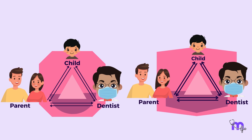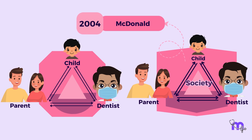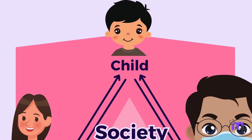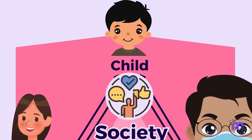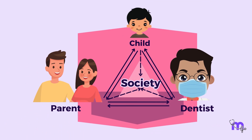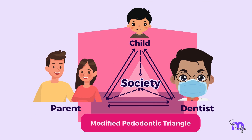The triangle was later modified by McDonald in the year 2004, when society was added as a new parameter at the center of the triangle, keeping in mind that society has a strong influence over the behavior of the child. This is called the modified periodontic triangle, where the management techniques have to be acceptable in society.